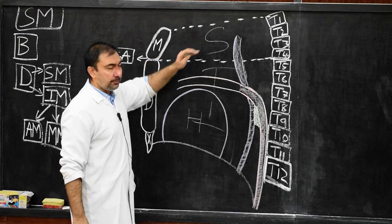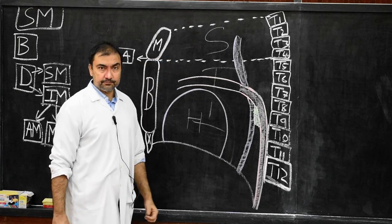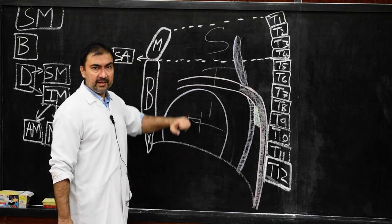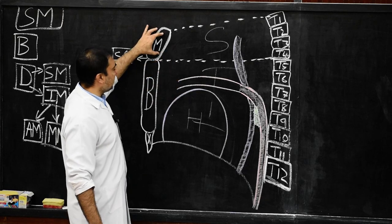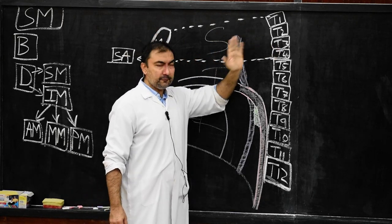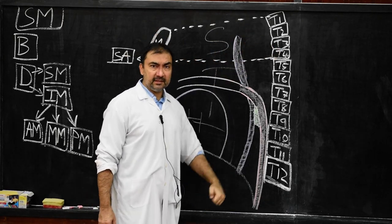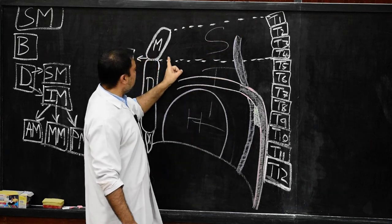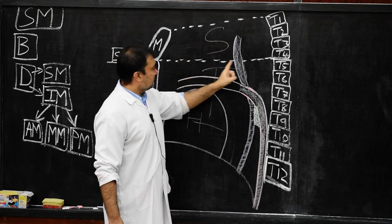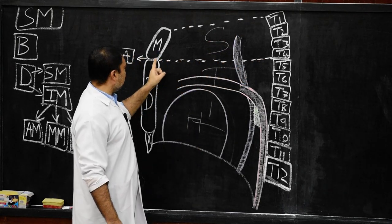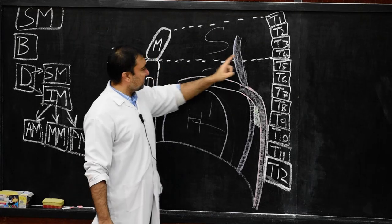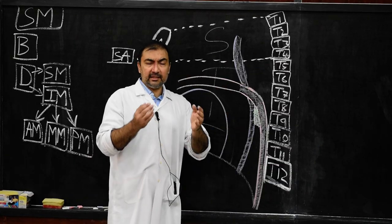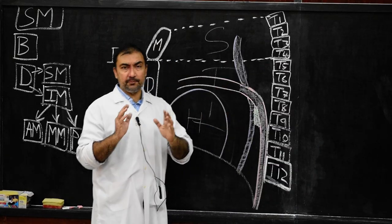Now we come to the superior mediastinum. Boundaries of superior mediastinum: anteriorly, manubrium sternum; posteriorly, upper four thoracic vertebrae; superiorly, plane of thoracic inlet; inferiorly, imaginary transverse plane passing from sternal angle to lower border of T4; and on each side, mediastinal pleura.